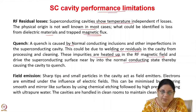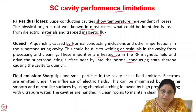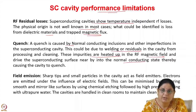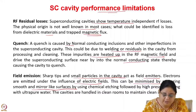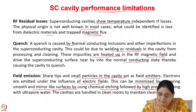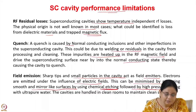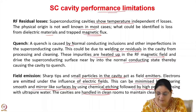Field emission occurs when sharp points in the cavity enhance the local electric field, leading to the emission of electrons. These electrons are accelerated by the electric fields and deposit large amounts of power on the superconducting cavity surface, causing it to quench. Sharp tips and small particles act as field emitters. They can be minimized by preparing smooth, mirror-like surfaces using chemical etching or electropolishing followed by high-pressure rinsing with ultrapure water. Cavities are then handled in clean rooms to maintain surface cleanliness.